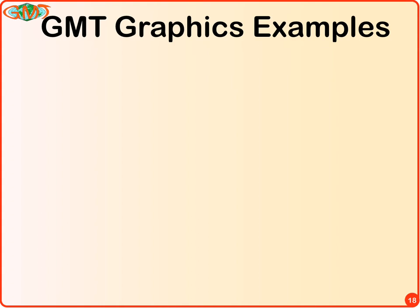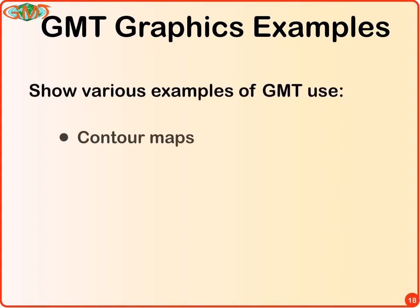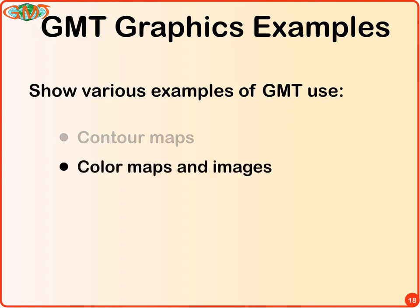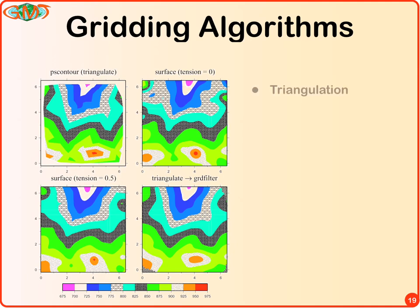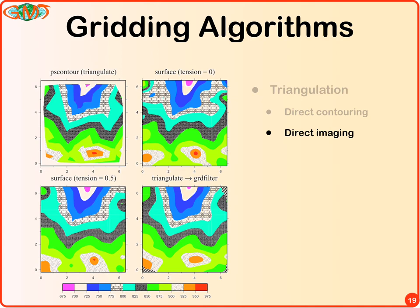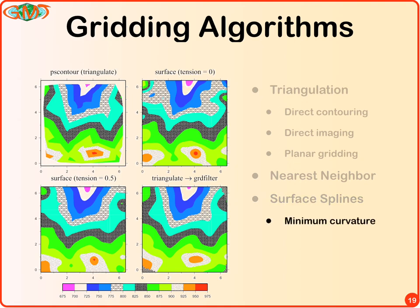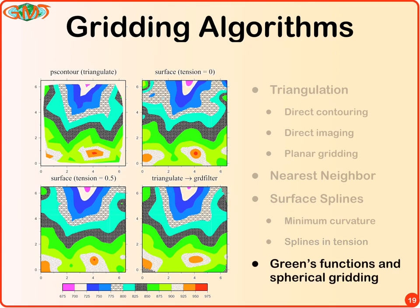Let me go through some GMT graphic examples. For gridding, we can make contour maps and color maps. There are several kinds of gridding available in GMT: triangulation, which is the rawest form — you can directly contour data by considering any three-point triplets as part of a plane; nearest-neighbor gridding; surface splines with minimum curvature or tension; and gridding with Green's functions from 1D to 3D Cartesian up to spherical gridding.